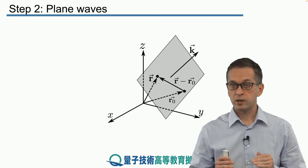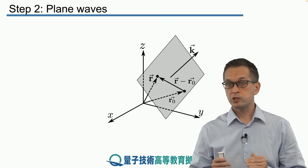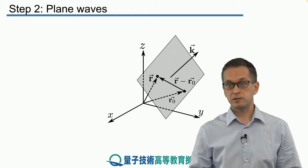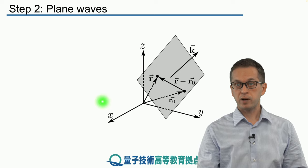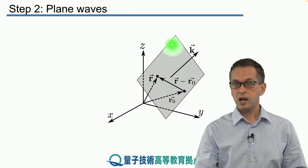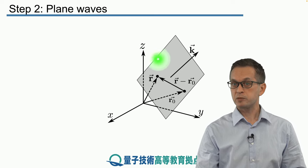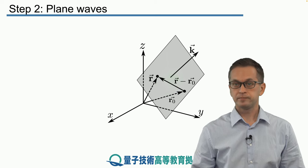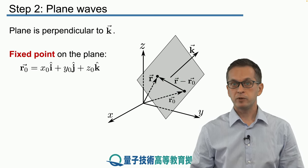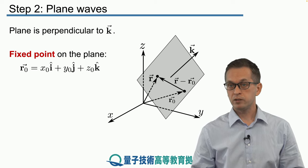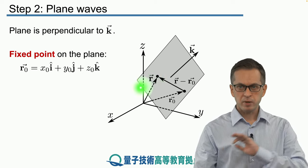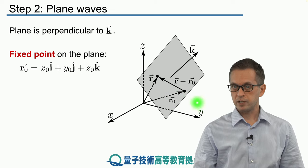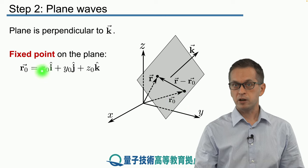Now let's get mathematical. Before describing a plane wave mathematically, we should consider how to describe a plane in three dimensions. Here's our coordinate system given by Cartesian coordinates x, y, and z, and we want a compact mathematical expression for the gray plane perpendicular to some vector k. We consider a fixed point on the plane given by vector r0 — it can be any point as long as it lies on the plane — with Cartesian components x0, y0, and z0.